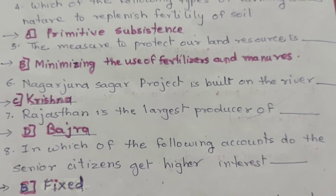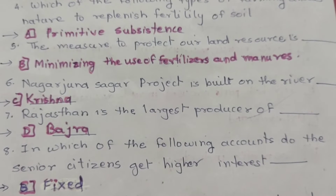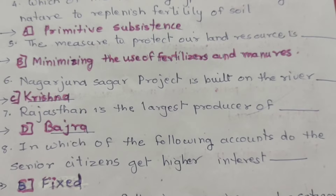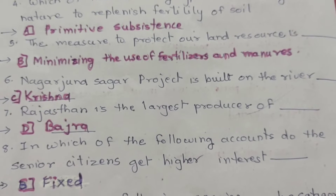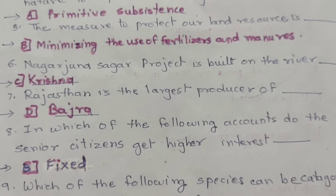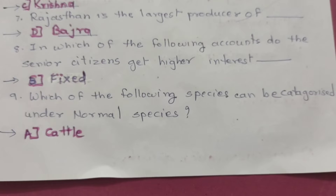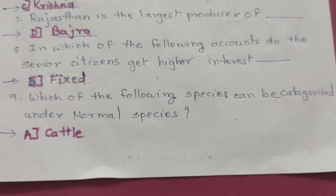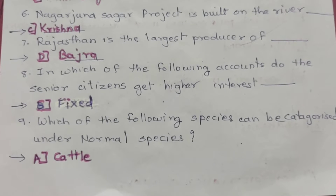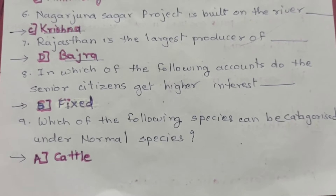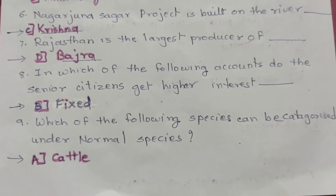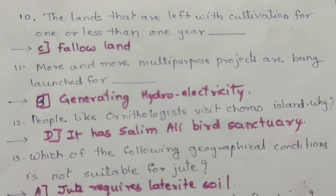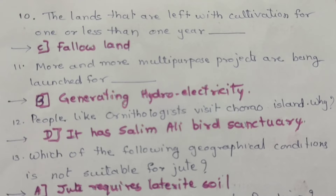Question 8: In which of the following accounts do senior citizens get higher interest? The correct option is B — fixed. Question 9: Each of the following species can be categorized under normal species. The correct option is A — cat.